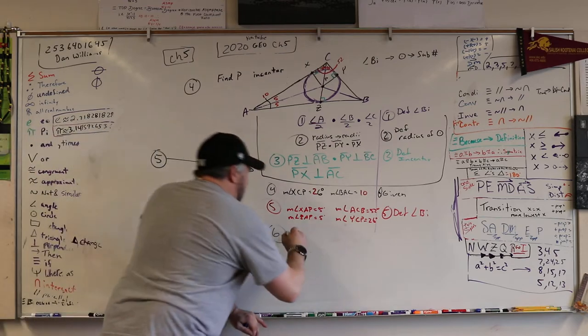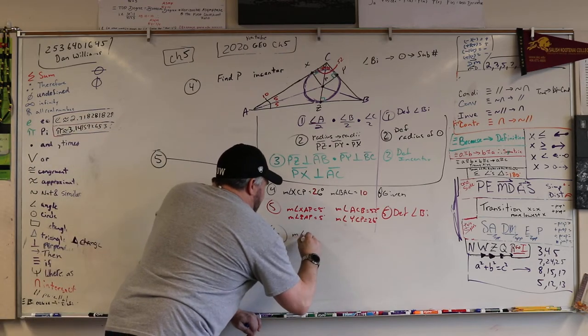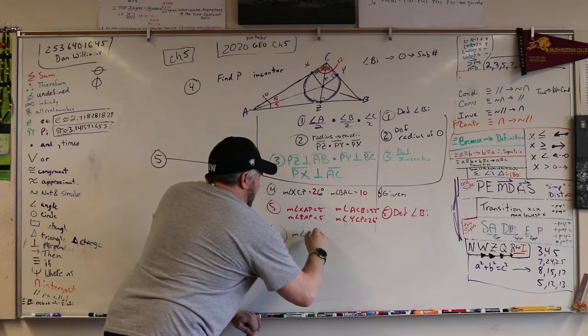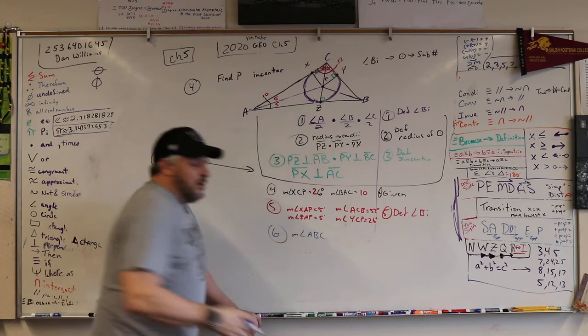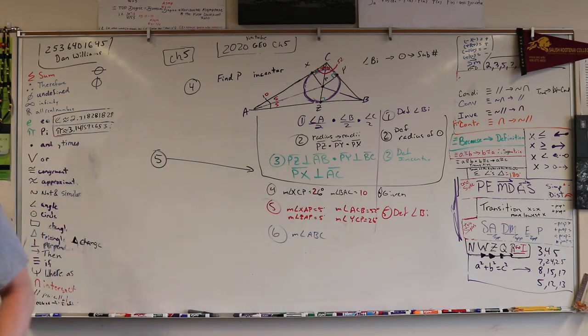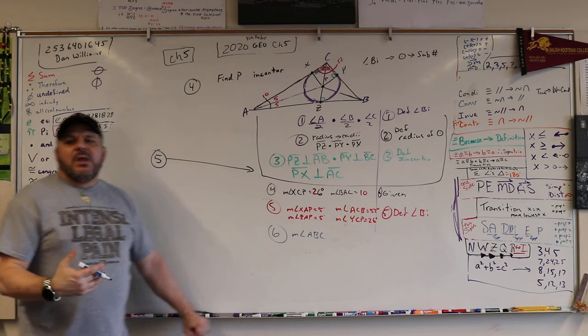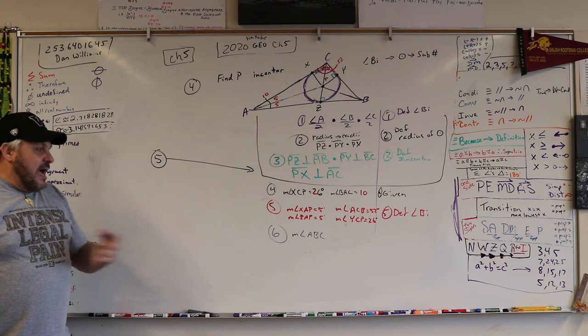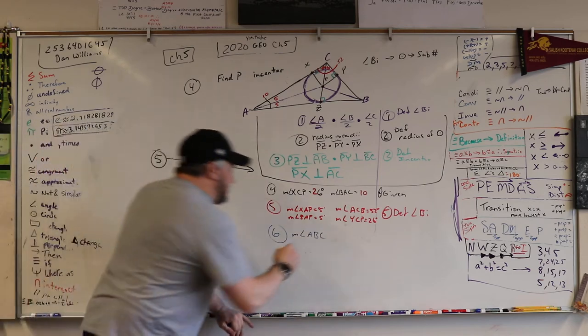We don't have the measure of angle ABC, or I would just call it angle B. But they didn't call it that, so I'm going with what they said. Now, how do we know, how can we say, what can we say that equals?